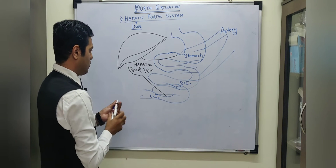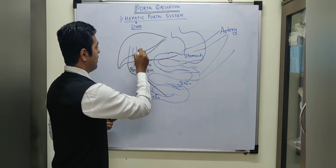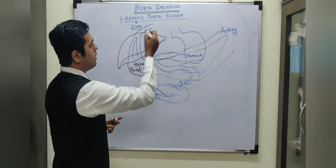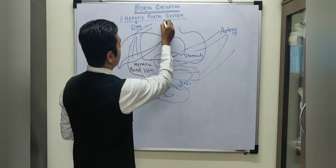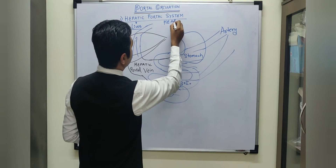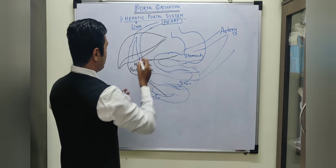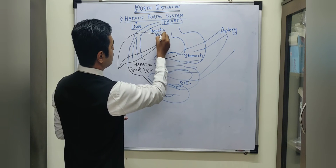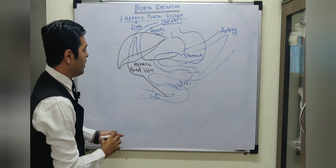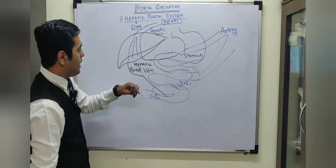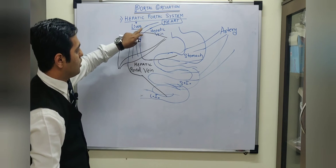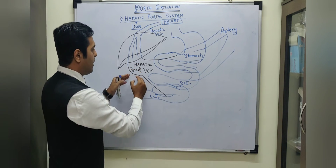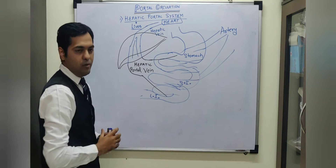The hepatic portal vein again divides into numerous capillaries inside the liver, and then these capillaries unite to form another vein which goes towards the heart. This vein, which goes towards the heart, is known as the hepatic vein. Students, understand that there is a difference between the hepatic portal vein and the hepatic vein. The hepatic vein arises from the liver going towards the heart, whereas the hepatic portal vein comes from the digestive organs, reaching up to the liver and carrying blood towards the liver.